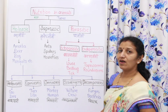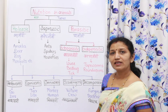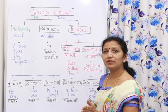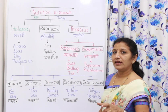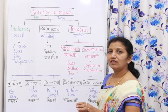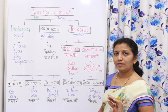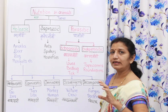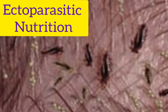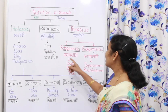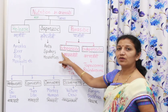Ectoparasitic organisms cause harm to the host by remaining outside the body of that host. For example, lice — single is louse and plural is lice. These lice remain in the hair of a person and suck their blood to nourish themselves, causing harm. Because they remain outside, they are called ectoparasitic.